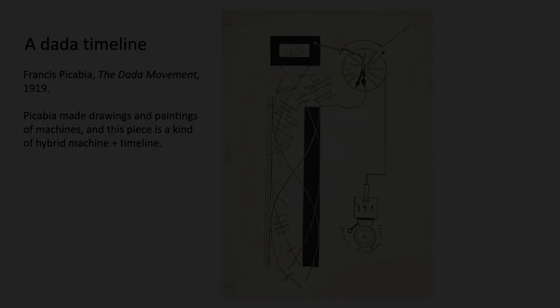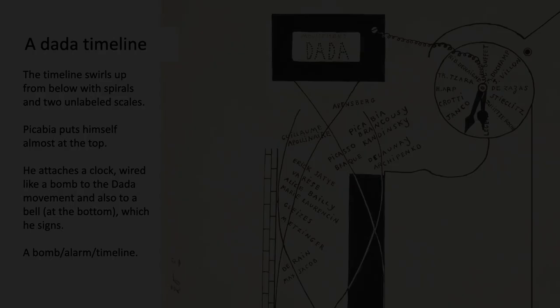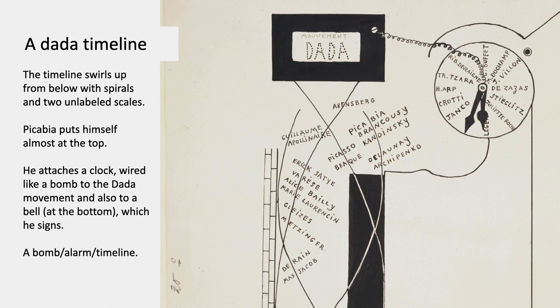This is a Dada timeline done by the artist Francis Picabia — it's called the Dada Movement. Picabia made drawings and paintings of machines, and this is a kind of hybrid machine plus timeline. The timeline swirls up the left-hand side, with names of artists he knew, and time runs up from the bottom. Picabia puts himself almost at the top, just below a black rectangle. He attaches a clock wired up like a bomb to the Dada Movement — it's actually a bomb-alarm timeline.